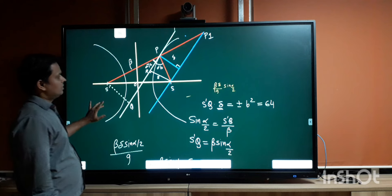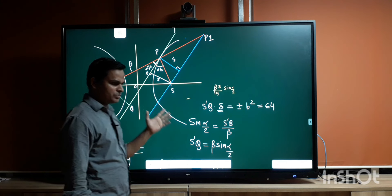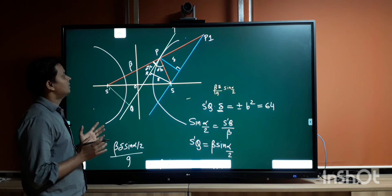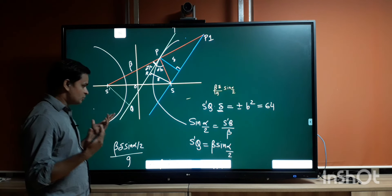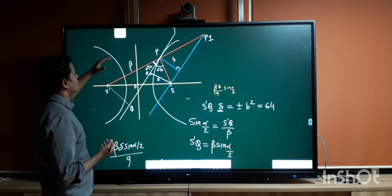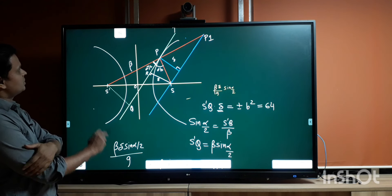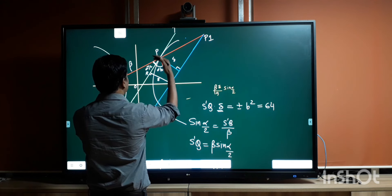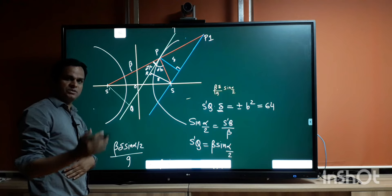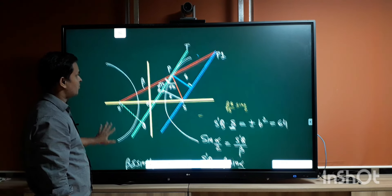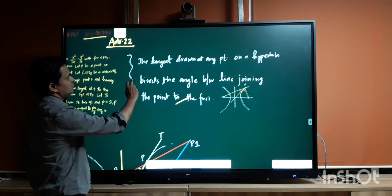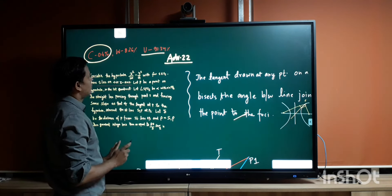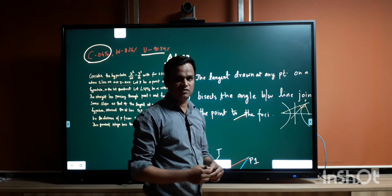The whole question was based on a very important property of the hyperbola that students often overlook: the product of the perpendicular lengths from the foci to any tangent is always equal to ±b². This was our tough question from JEE Advanced 2022. I hope you enjoyed this video. Thank you.